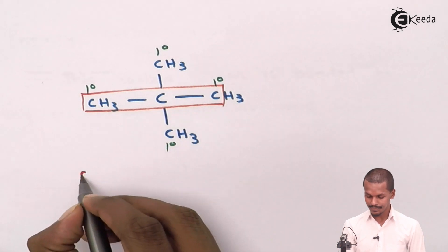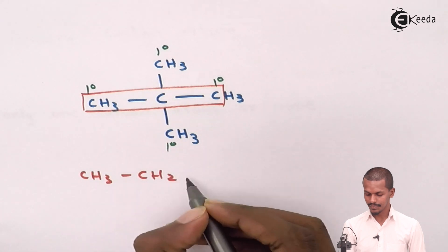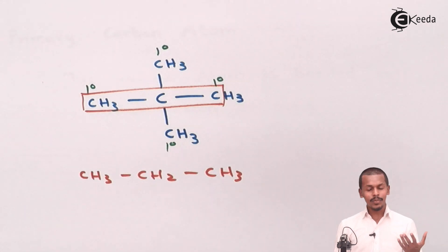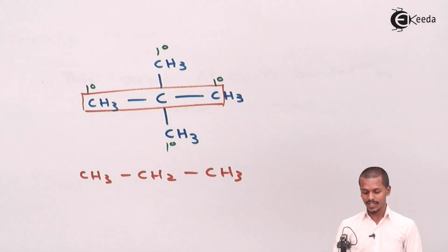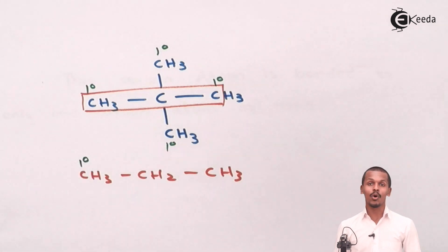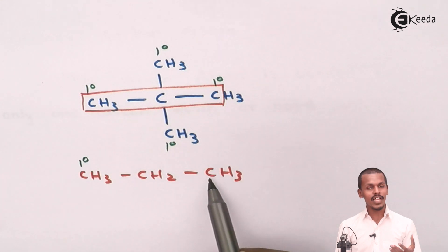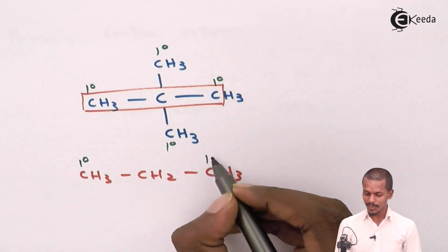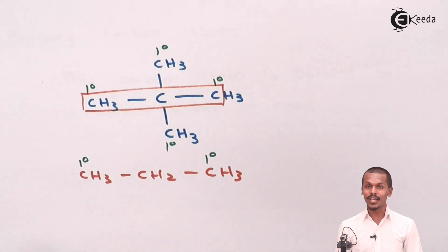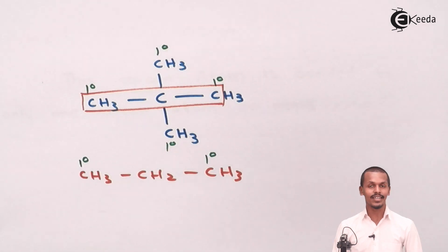This is basically propane, and we have to detect which one is the primary carbon atom. This terminal carbon atom is attached to only one carbon atom, so it is called a primary carbon atom or one degree carbon atom. Similarly, this carbon on the other end is attached to only one carbon atom, making it primary. But the middle carbon atom is attached to two different carbon atoms, so it will not be primary.